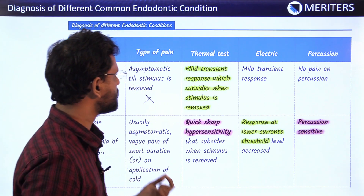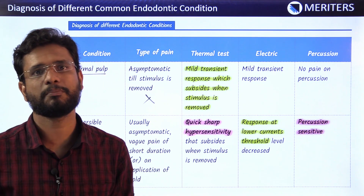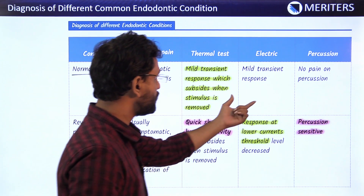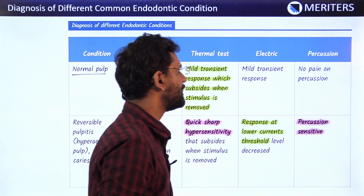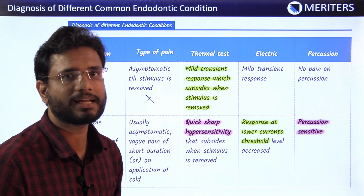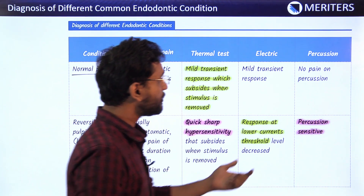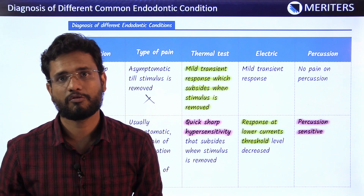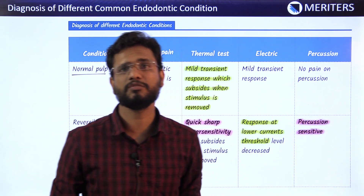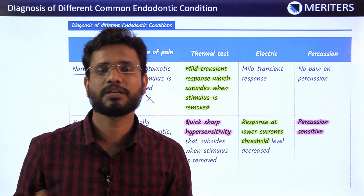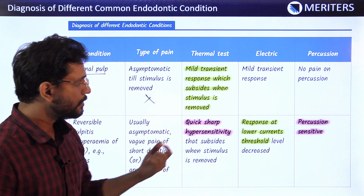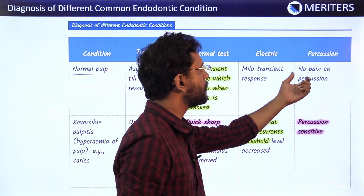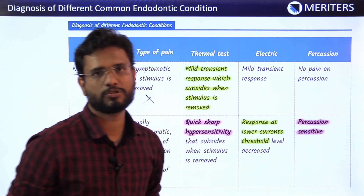There will be a slight response from the pulp indicating that the pulp is vital, but no pain beyond that. If we do electric pulp testing, we again get a mild transient response confirming vitality and the health of the nerve fibers present. For tenderness on percussion, there won't be any pain, because percussion is a test for the health of the periapical periodontal ligaments. Since there is no pathology in the periapical area, the PDL will also show no response.